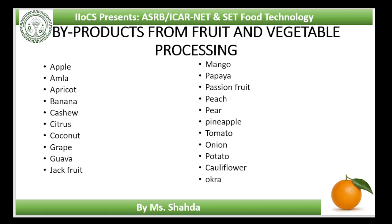Major wastes and by-products of apple processing are pomace obtained after juice extraction, peel obtained during canning and murabba preparation, core and cull fruits. Apple wastes contain pectin varying from 2.5 to 3.4% on a fresh weight basis. These wastes can be used for preparation of pectin, cider, vinegar, chutney, etc. Pomace can be dried and utilized for preparation of pectin.